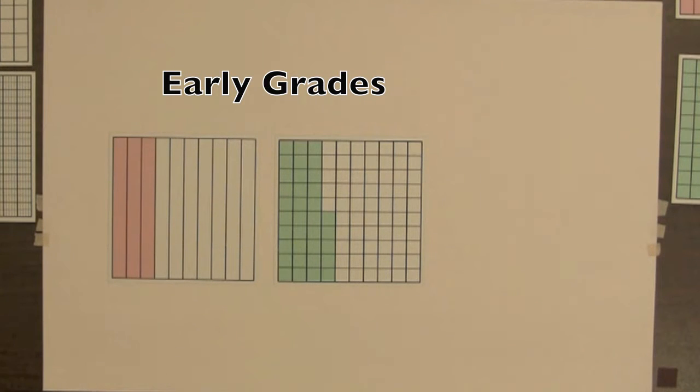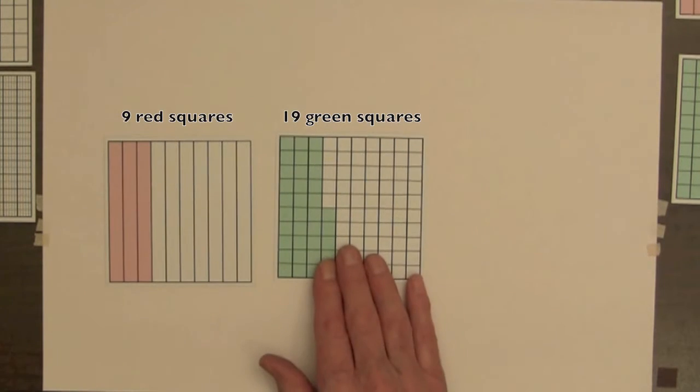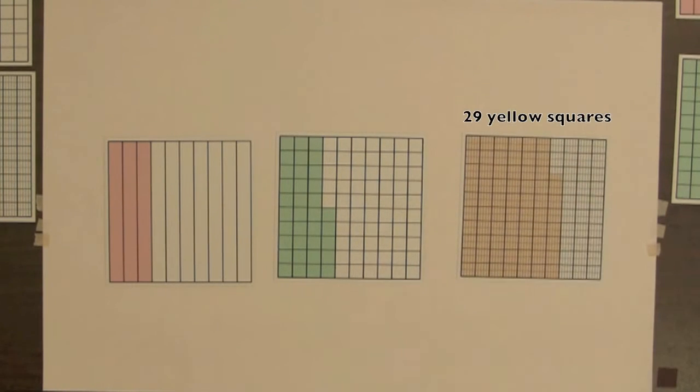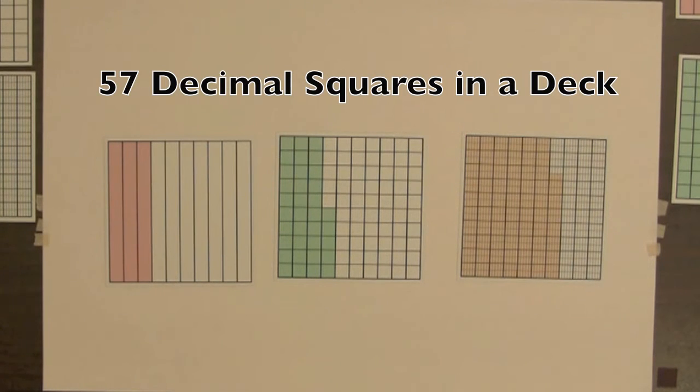Students can sort this deck of squares and look for patterns in the shaded amounts. They will find that there's 9 different red squares, 19 different green squares, and if they use the yellow squares, there are 29 squares for a total of 57 decimal squares in a deck.